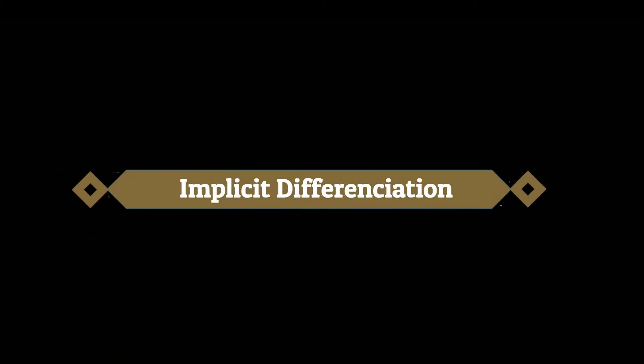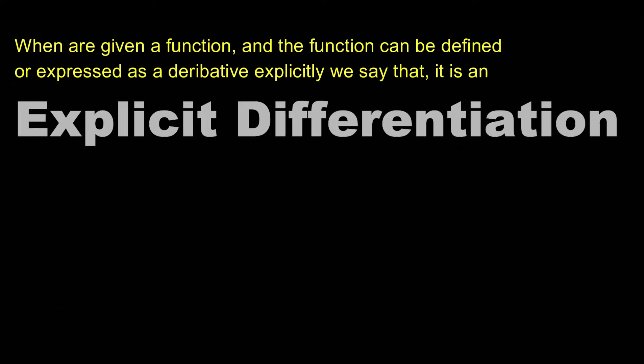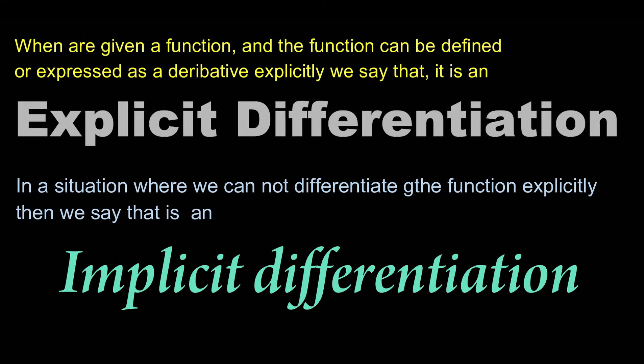Let's look at the meaning of implicit differentiation. When we are given a function that can be defined or expressed as a derivative explicitly, we say that is explicit differentiation. In a situation where we cannot differentiate the function explicitly, we say that it is an implicit function.